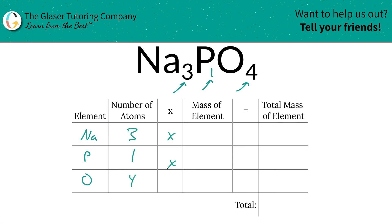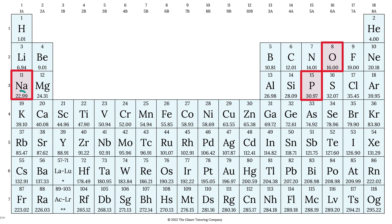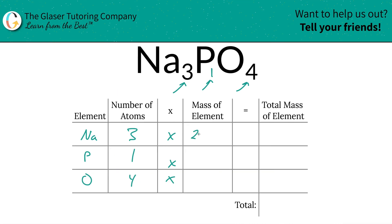and four oxygen. Then we're going to take those number of atoms and multiply it by the mass of each element. That's where the periodic table comes into play. So sodium's mass is 22.99, phosphorus is 30.97, and oxygen is 16.00. So we're going to write those on down. So 22.99 for sodium, 30.97 for phosphorus, and then 16.00 for our oxygen.